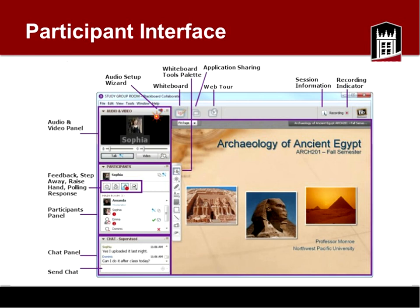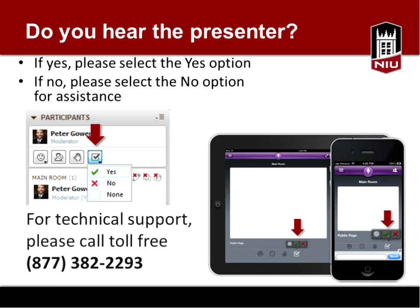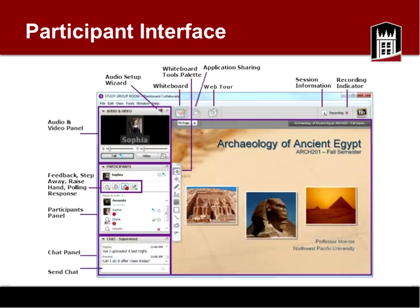It's good to recommend the audio setup wizard to your students, especially if they begin typing in chat that they can't hear you. First, make sure you're actually talking and have enabled your talk button. If you know your audio is working, point that feature out to students and have them run it themselves. If they're still having problems, refer them to Blackboard support, which has 24-7 toll-free support available.